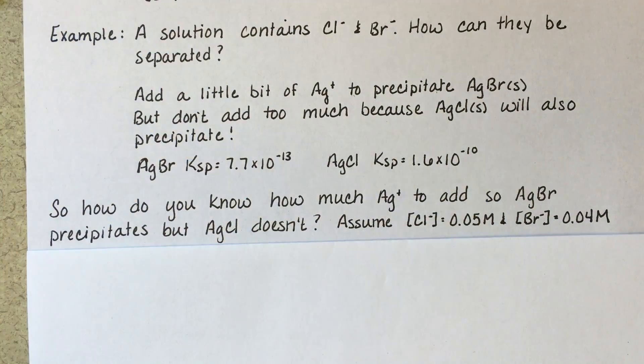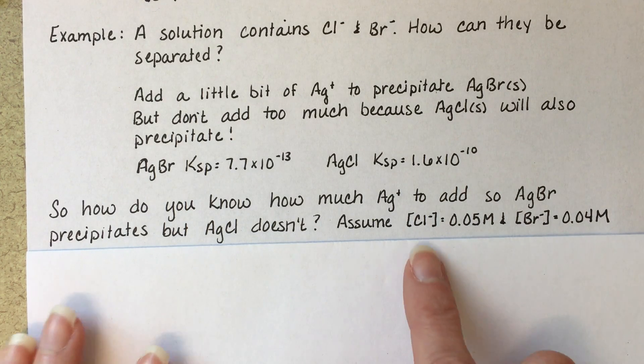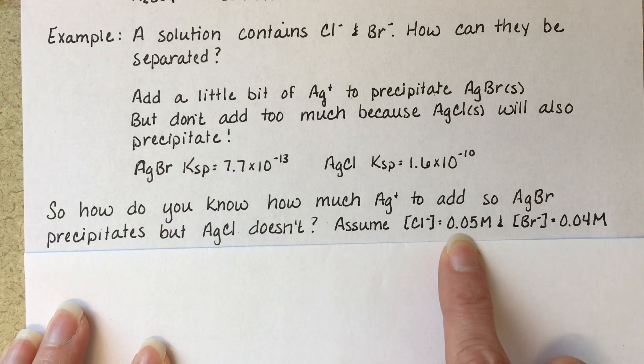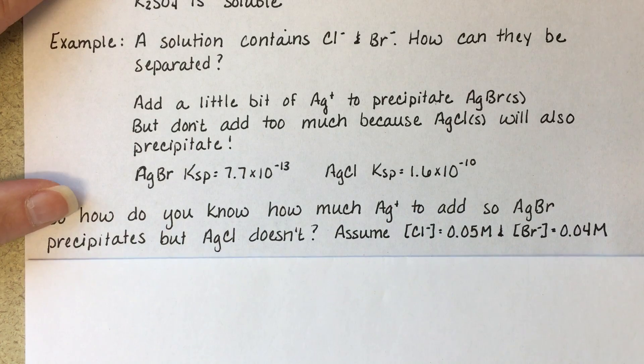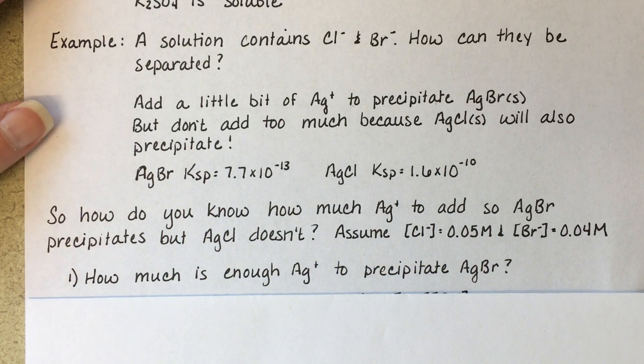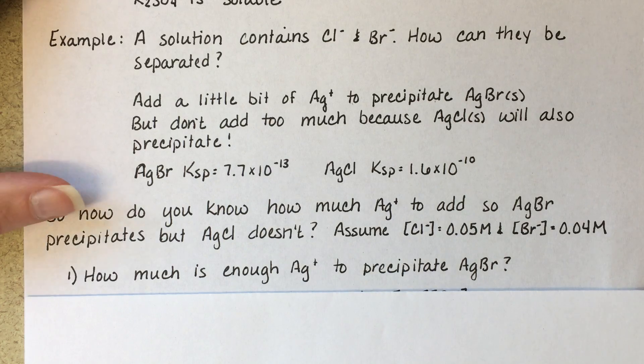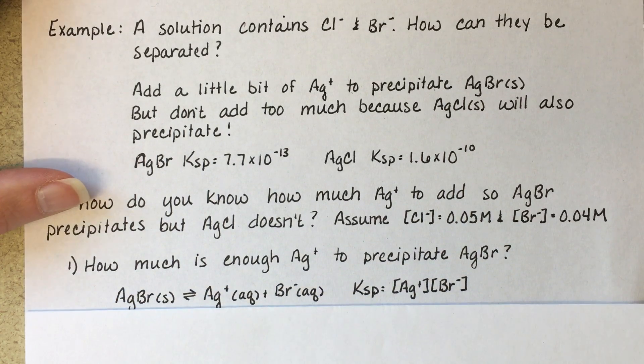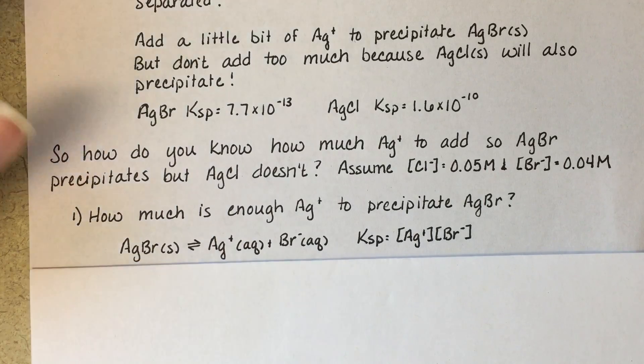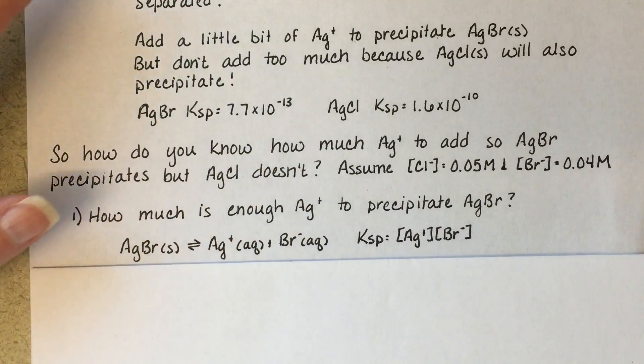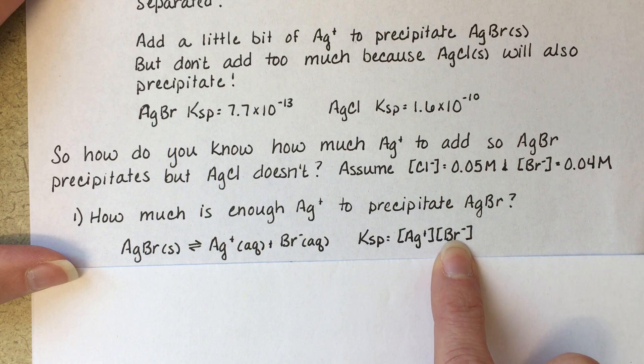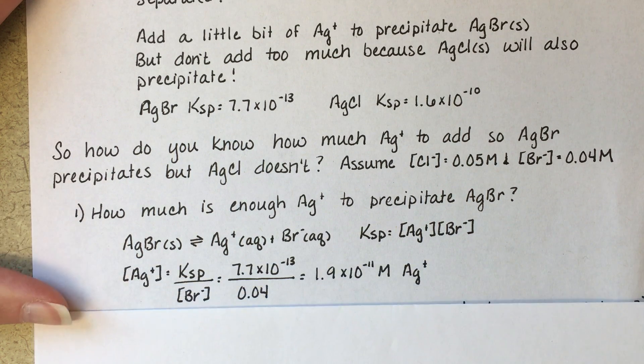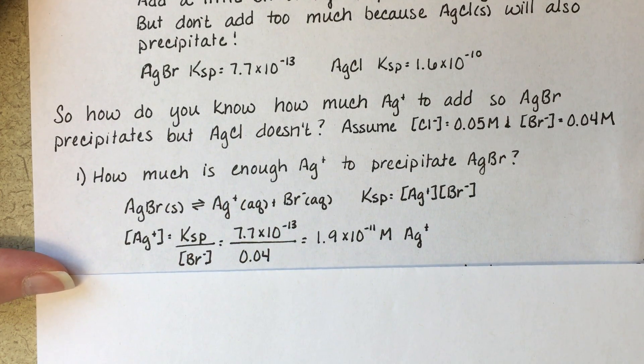How do you know how much silver to add so that silver bromide precipitates and silver chloride doesn't? Let's say for this solution we found that the chloride ion concentration was 0.05 and bromide was 0.04 in this solution that we're trying to separate. What we're going to do first is calculate how much silver is enough to get the silver bromide to come out. We're going to use the equilibrium equation and the equilibrium expression for silver bromide. We know silver bromide's KSP and the concentration of bromide, so we're going to calculate the concentration of silver that we need to precipitate AgBr.